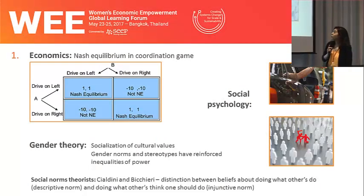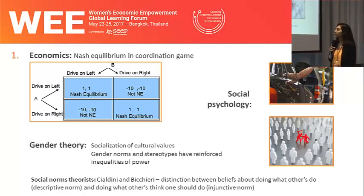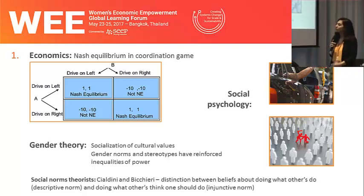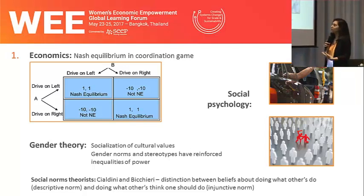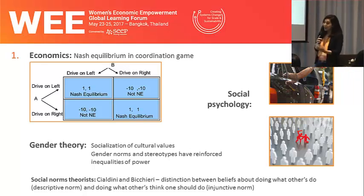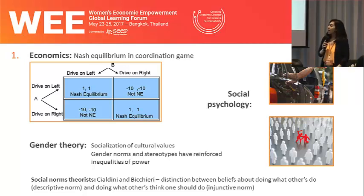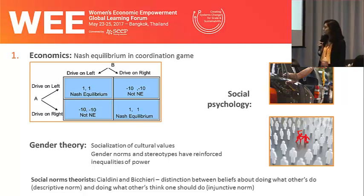Economics, social psychology, gender theory, and philosophy can all help shed light on what social norms are and how they influence behavior, and uphold some of the gender inequalities that we're trying to address. Social norms theorists Calvini and Bikiri and others have built on these contributions and made an important distinction between beliefs about doing what others do — which they call descriptive norms — and beliefs about doing what others think one should do, or what they call injunctive norms.